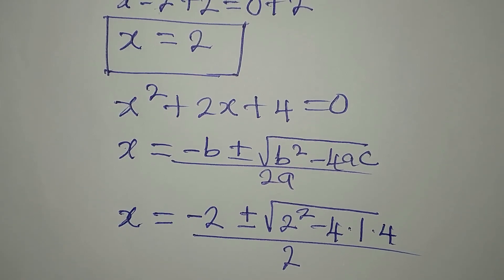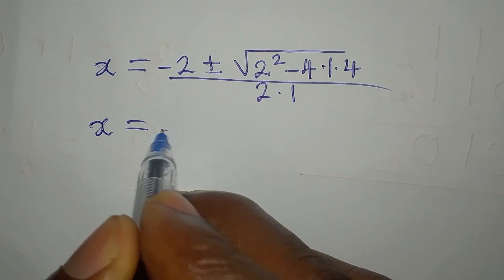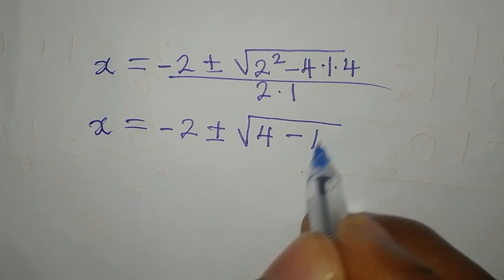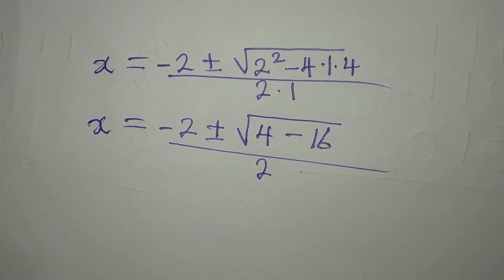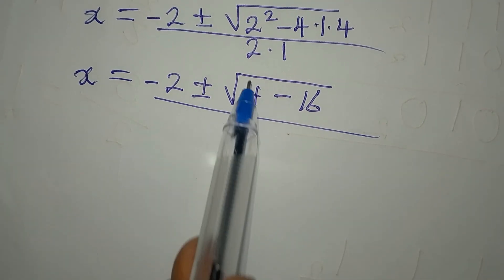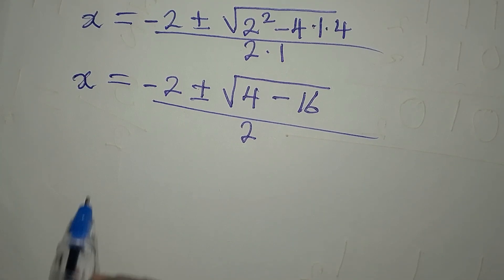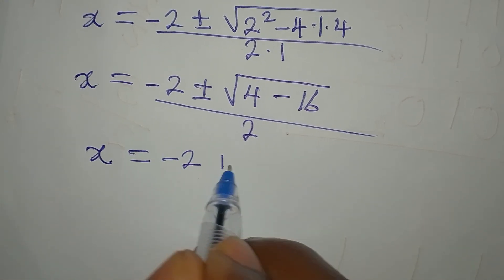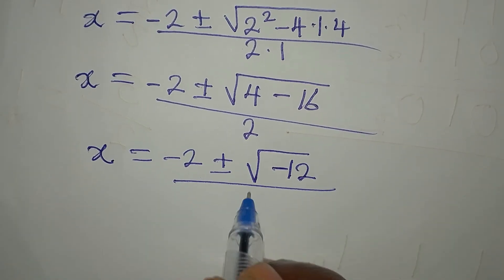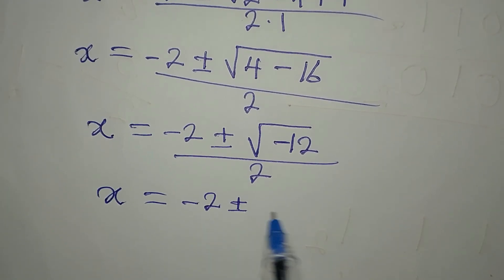Continuing: x equals negative 2 plus or minus the square root of 4 minus 16, divided by 2 times 1, which is 2. Some students might try to take the square root of each number separately before simplifying, but that is not correct — you must simplify first. So x equals negative 2 plus or minus the square root of negative 12, divided by 2.